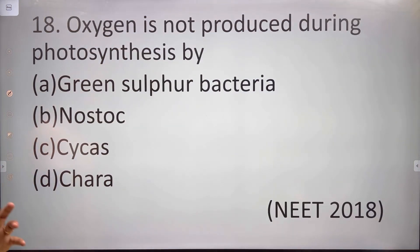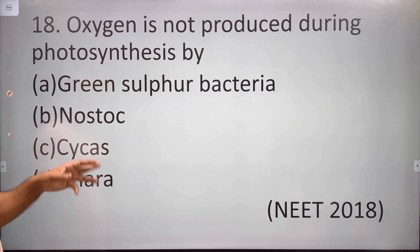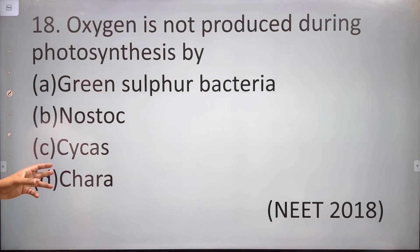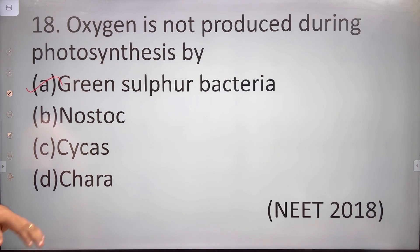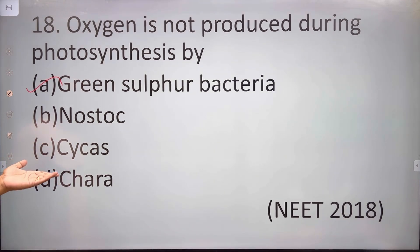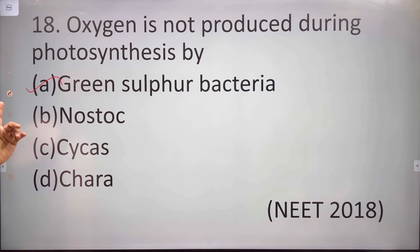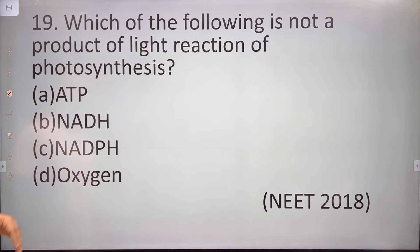Oxygen is not produced during photosynthesis by green sulfur bacteria. Cyanobacteria are the organisms that produce oxygen during photosynthesis.